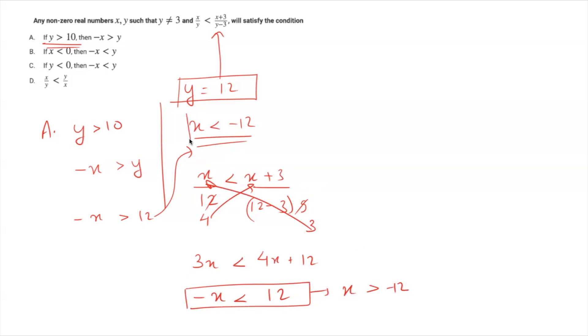But we want x is less than minus 12 to be true, right? This is not correct and hence the option A is not a correct answer possibly. So, we'll simply eliminate the option A.